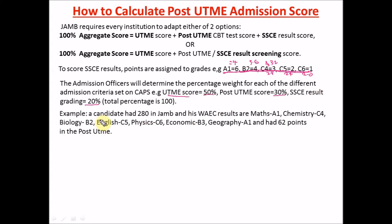Let's do a quick example. Say a candidate scored 280 in JAMB. Their WAEC results are: Maths, Chemistry, Biology, English, Physics, Economics, and Geography. When you fill in for JAMB there are five compulsory WAEC subjects for each course and university. For an engineering or science course that would be Maths, Chemistry, Biology, English — which is compulsory — and Physics. These five subjects will be used.